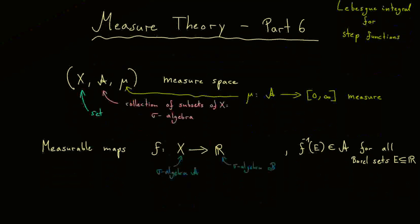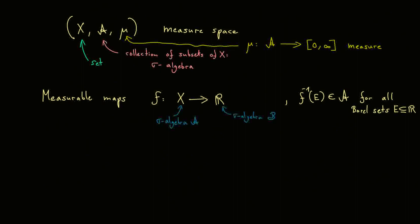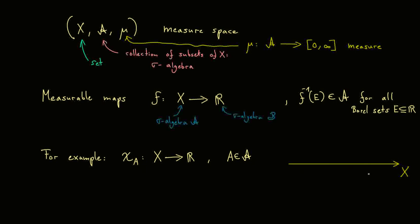So these are the functions where we want to be able to integrate them in the end. However, at the moment they might be too complicated, so we start with functions that we already know. For example, we already know that the characteristic function is a measurable map if we choose a measurable set, meaning A lies in the sigma algebra. We already know how to sketch this function: if we have our abstract x here on the line and maybe this is the set A, then we can sketch the graph of our characteristic function. It will be 0 here and has the value 1 where the set A lies.